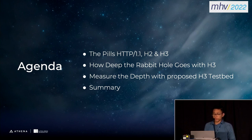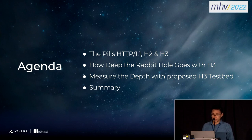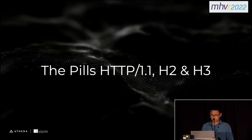The first section is about the current protocols we have, like HTTP 1.1, HTTP/2, and HTTP/3. Then I will talk about how deep the rabbit hole goes with HTTP/3. I will also present a way to measure the depth with our proposed HTTP/3 testbed. The last section will be the summary of the talk. Let's get started with the current protocols.